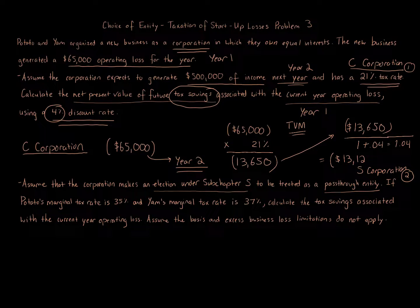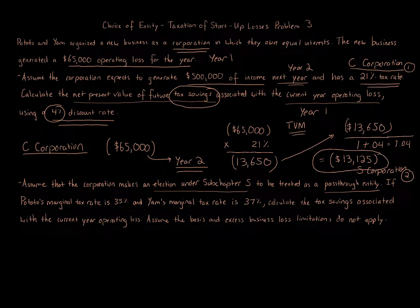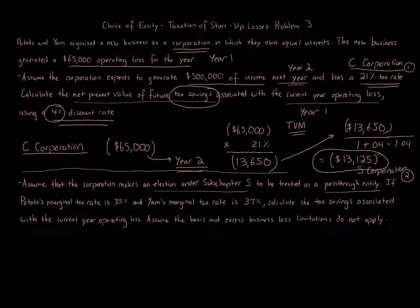The result is $13,125 in tax savings — it reduces your tax owed by $13,125. That is the answer to variation one. For a C corporation, remember: the loss stays in the entity; you cannot pass it out to the owners.